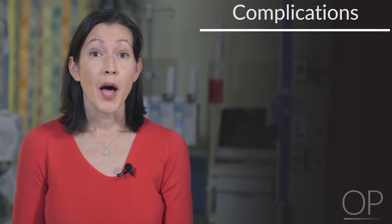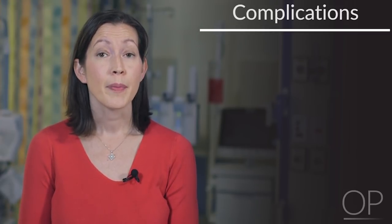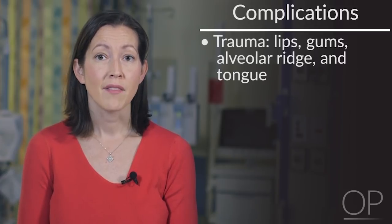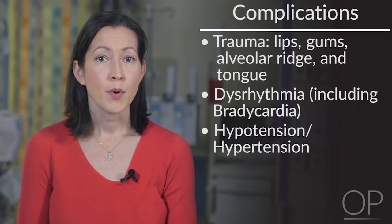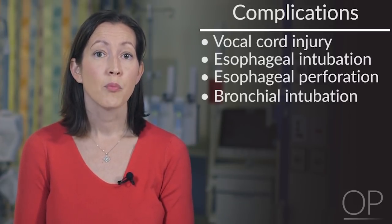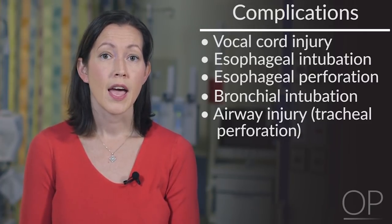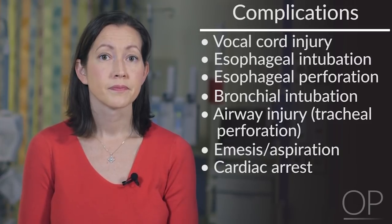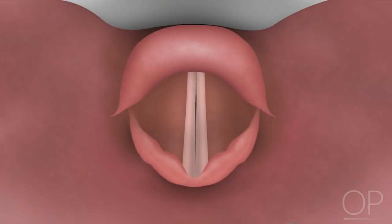Potential complications encountered during orotracheal intubation include, but are not limited to, trauma to lips, gums, alveolar ridge, and tongue, dysrhythmia including bradycardia, hypotension or hypertension, bronchospasm, laryngospasm, laryngeal trauma, vocal cord injury, esophageal intubation or esophageal perforation, bronchial intubation, airway injury including tracheal perforation, emesis and aspiration, and cardiac arrest. To avoid potential complications, providers should take care during insertion and avoid undue pressure on the fragile tissues of the airway. The endotracheal tube should not be advanced unless the intubator can clearly visualize the glottis, and the tube should not be advanced if the vocal cords are closed. The use of premedication is recommended to decrease patient movement and agitation, which may increase the risk of trauma.